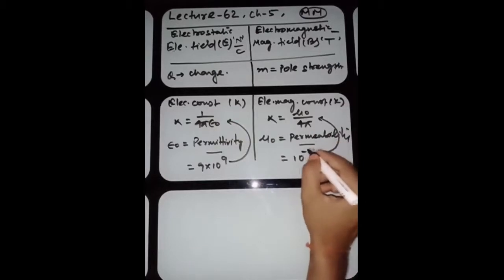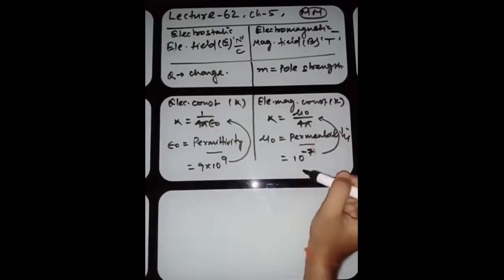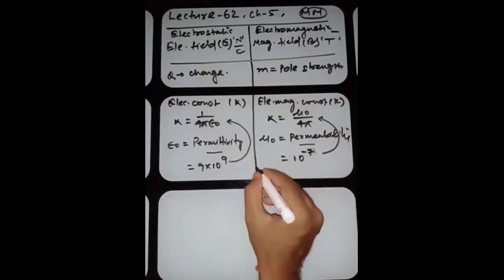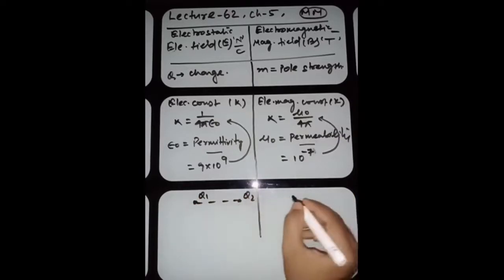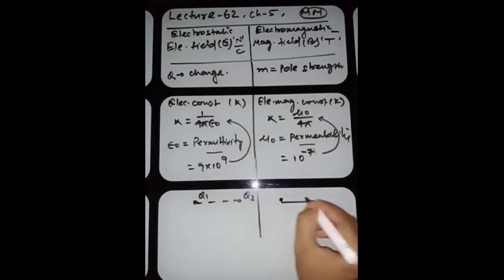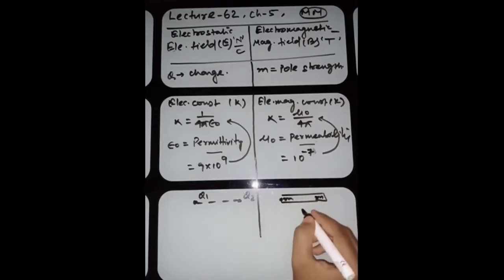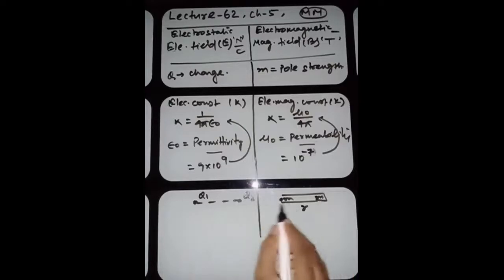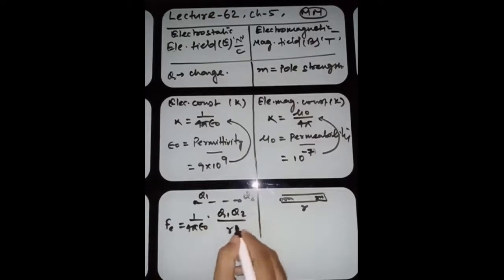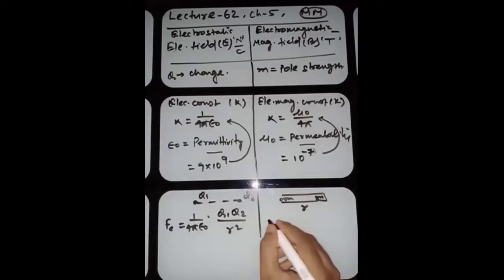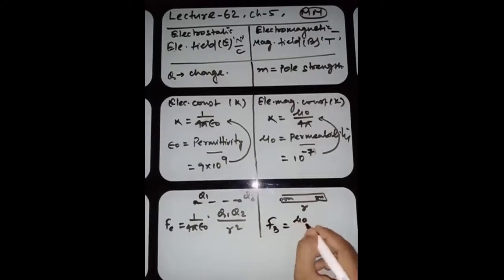The value of mu-naught by 4π is 10 to the power minus 7, and 1 by 4π epsilon-naught is 9 times 10 to the power 9. Then we studied the force between two charges q1 and q2 separated by distance R. Similarly, here we have two poles M separated by distance R. The electrostatic force is K times q1 q2 by R-square, following the inverse square law.